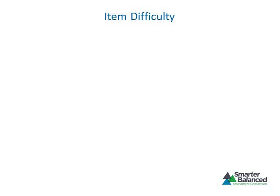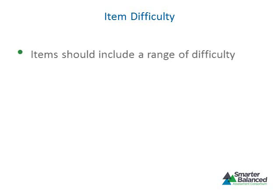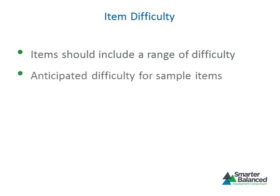A range of difficulty is necessary to discriminate between low and high performing students. Items and tasks should form a continuum from easy—those that most students could be expected to answer—to hard—those that only a few students could be expected to answer—with most items falling in the middle range of difficulty. An adaptive test requires items that span a full range of difficulty. Item writers need to include items they perceive as easy, medium, and hard. Each sample item in the item specifications provides information about its anticipated difficulty level.